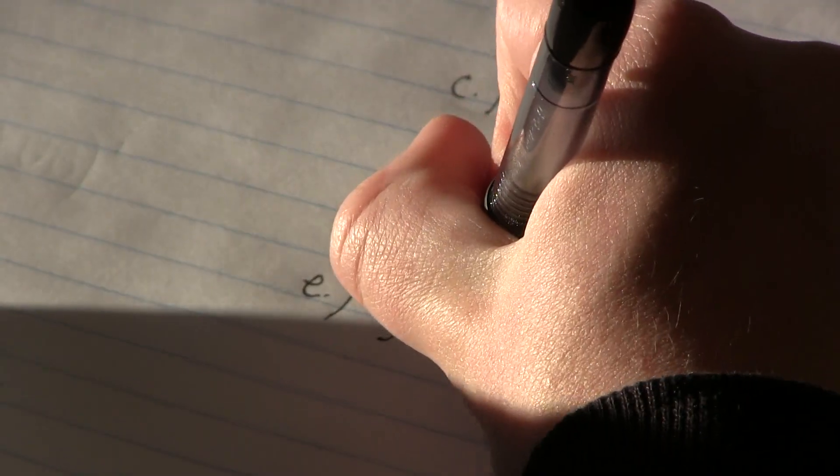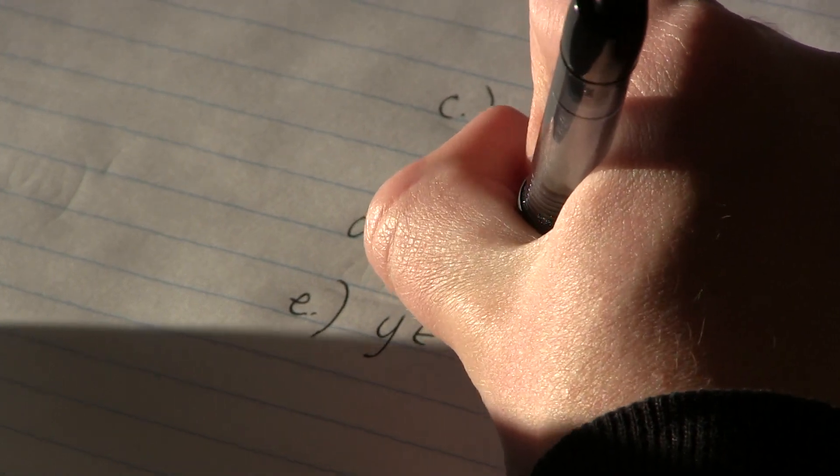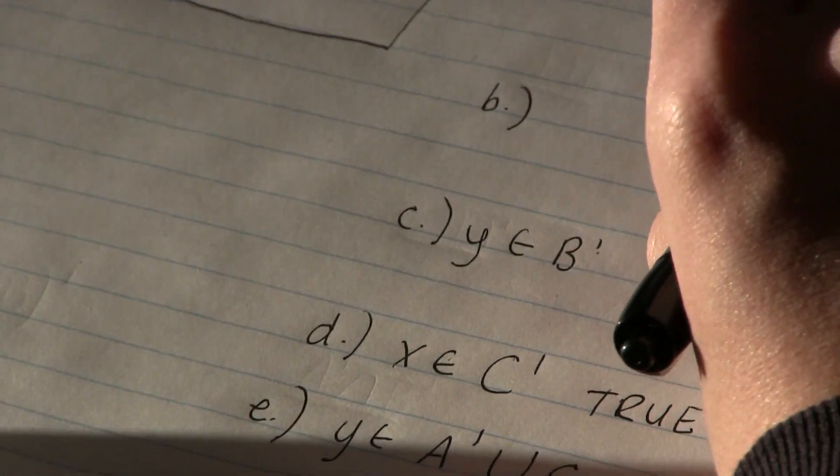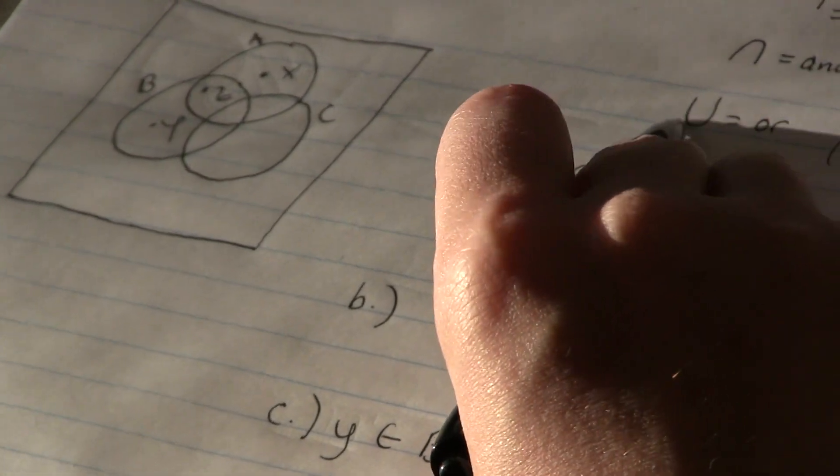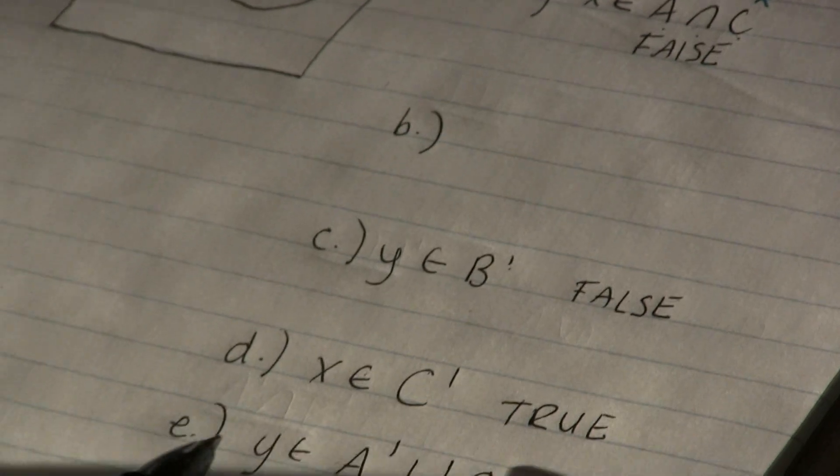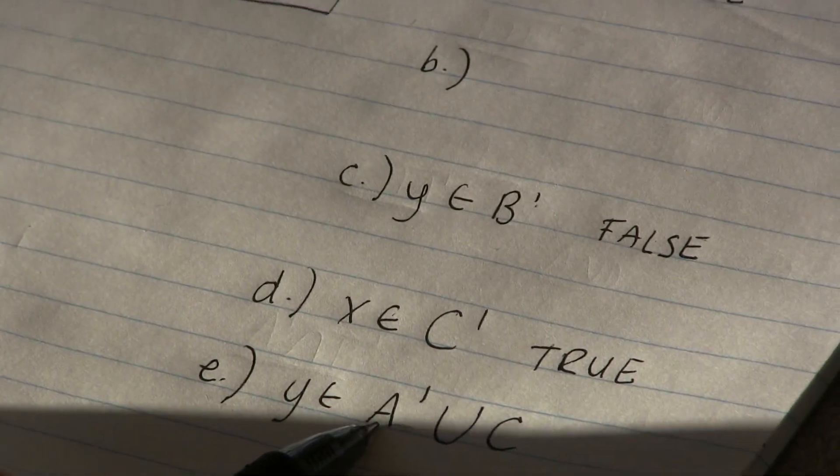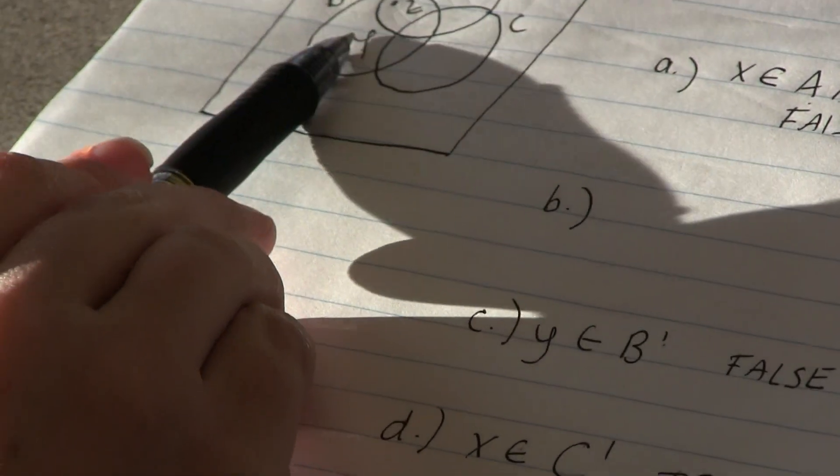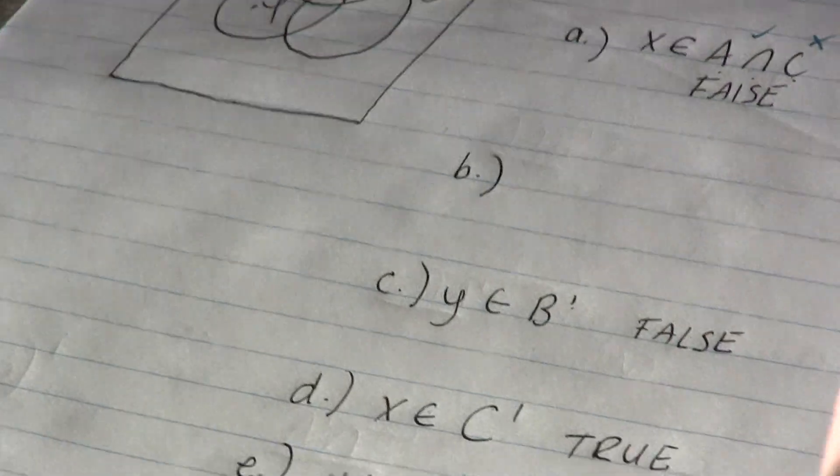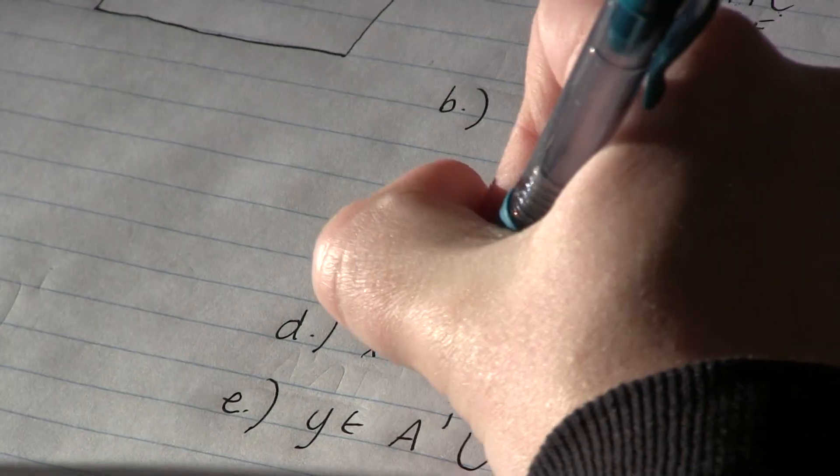E says Y lives in A complement union C. Okay, so this is the one where I just have to satisfy one of the two things on either side of that symbol. So let's see what it satisfies. Does Y live outside of A? It does because this circle A, Y lives outside of it. So Y satisfies this condition on the left. Cool.